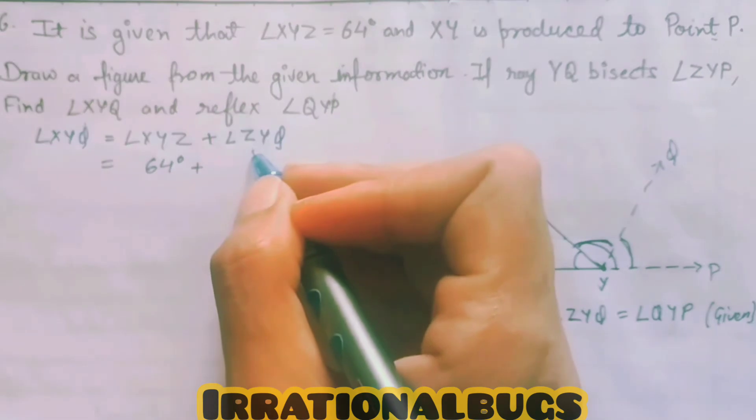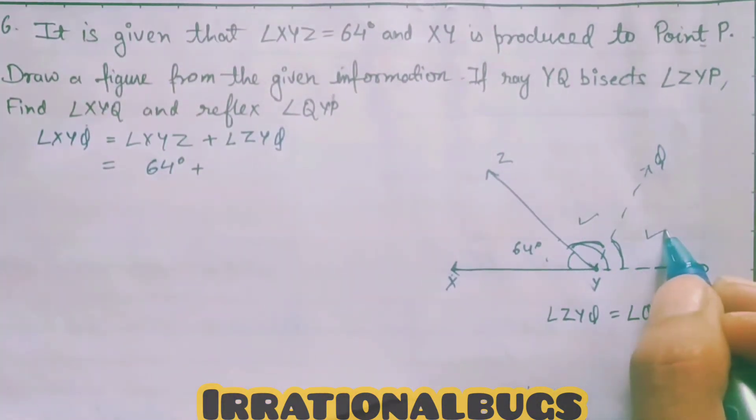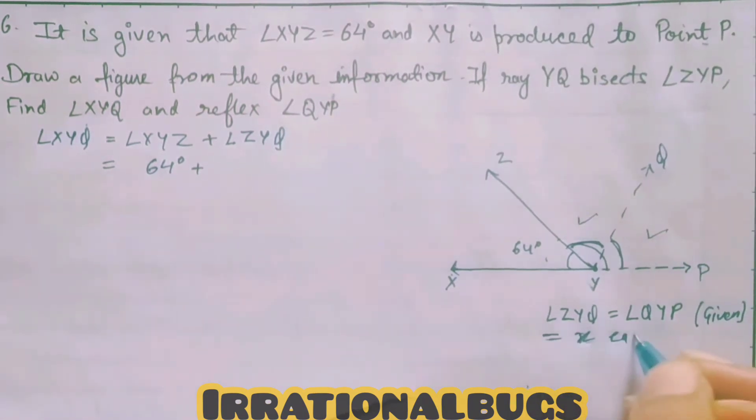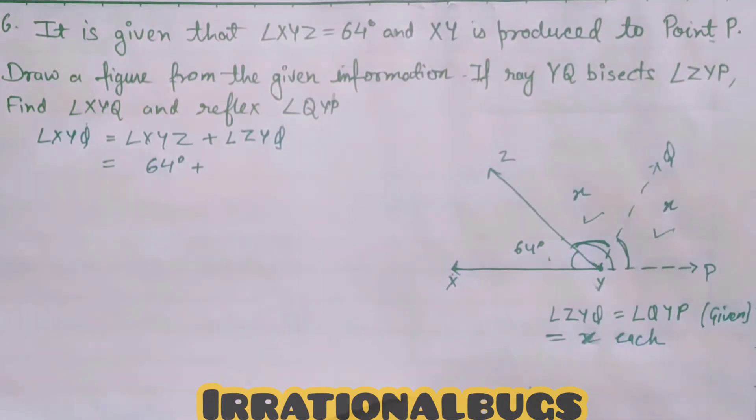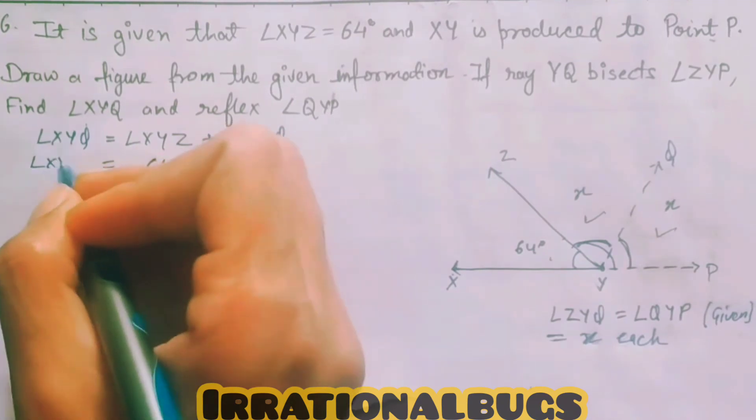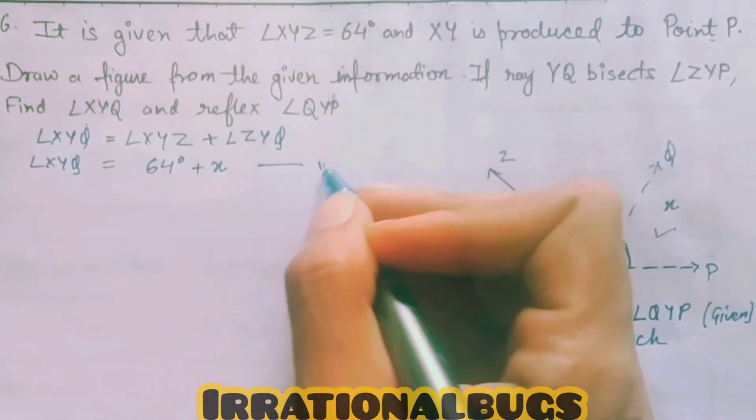I have to find the value. 64 degrees is given. ZYQ we do not know. We can do this because this angle and this angle are equal to bisecting. So, we assume X each. So, this is X and this is also X. So, angle XYQ will be 64 degrees plus X. This is our first equation.